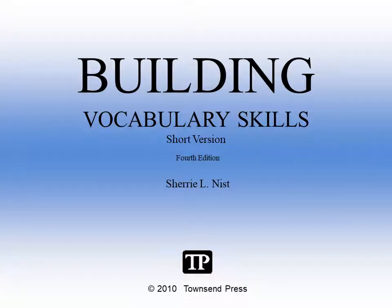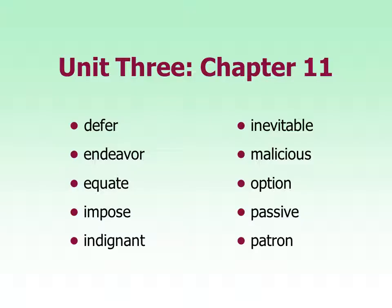This is Building Vocabulary Skills, Chapter 11. I'm going to say the words for you and then you can repeat so you can get the pronunciation down. Defer. Endeavor. Equate. Impose. Indignant. Inevitable. Malicious. Option. Passive. Patron.